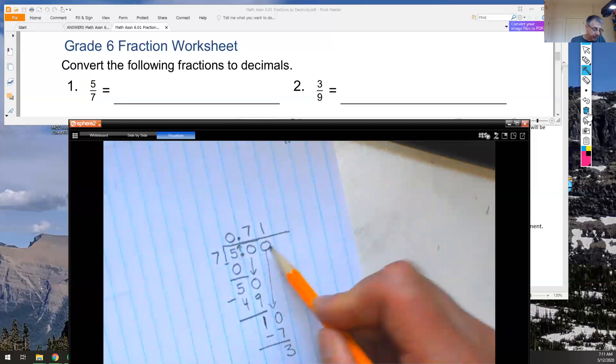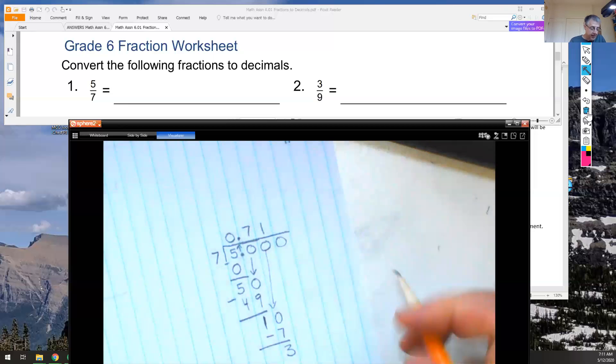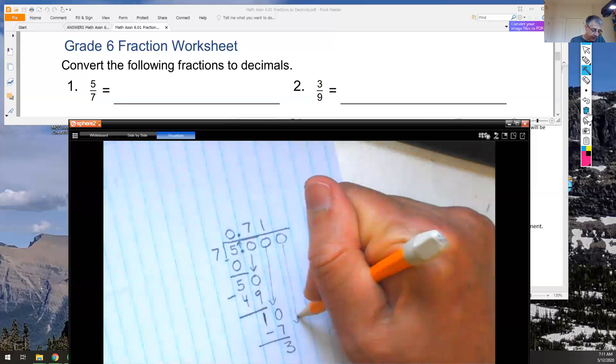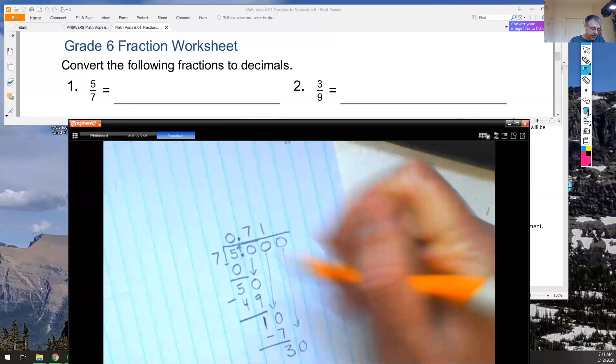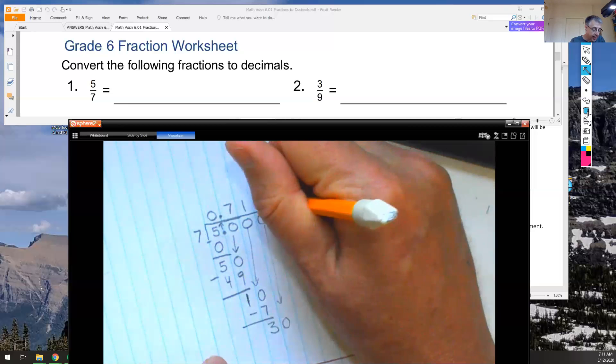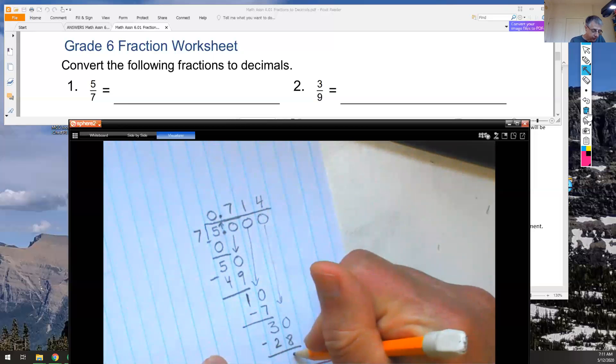I'm at the hundredths place, so I'm going to continue on until I get to the thousandths place. And I may, if I get a remainder, just go on one more and round. So I'm going to drop down my remaining 0. 7 times something is close to 30. That's 7 times 4 is 28, pretty close to 30. So I'll put 28 underneath my 30 and subtract. 30 minus 28 is 2.